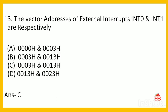Next: the vector addresses of external interrupts INT0 and INT1 respectively. Options are 0000H/003H, 003H/003H, 003H/0013H, or 001H/0023H. The correct answer is option C — the vector addresses of INT0 and INT1 are 0003H and 0013H respectively.